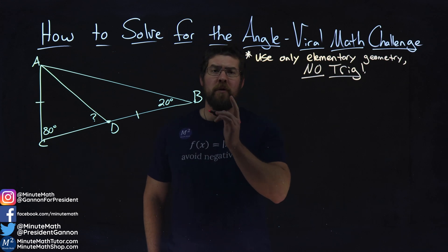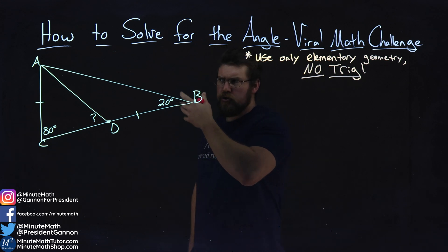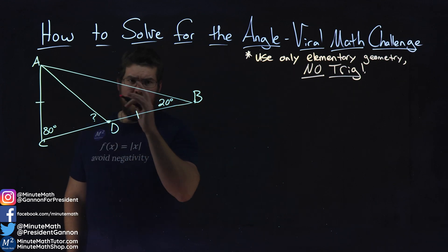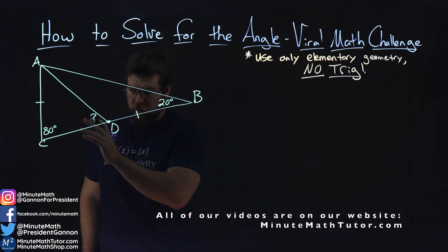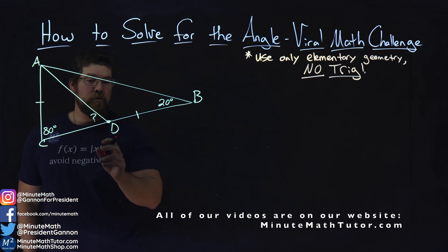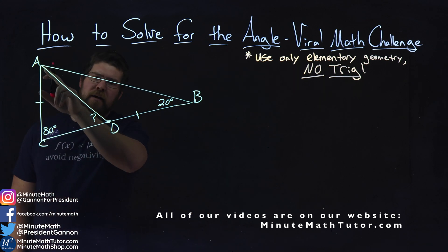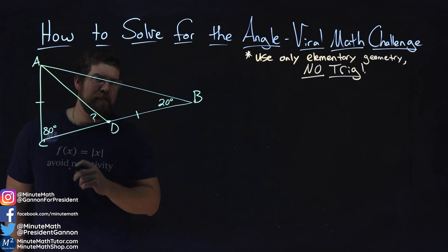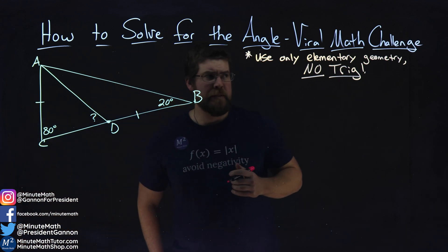We're going to learn how to solve for this angle. We're given this triangle — triangle ABC — where angle B is 20 degrees and angle C is 80 degrees. Length AC is equal to length DB, and we have a line drawn from A to D, which creates a missing angle that we need to find.